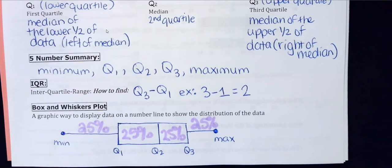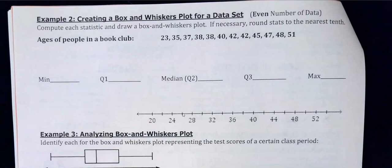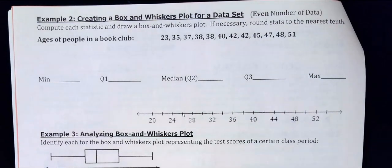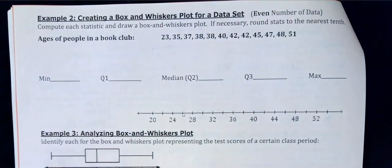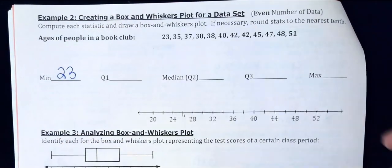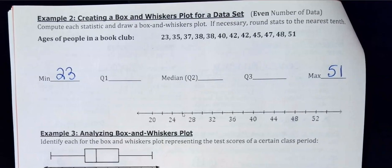On the back we have an even number of data values to show what changes. The data is already in order from least to greatest. The minimum is 23 and the maximum is 51. Calculate the median first, since you need it to identify the lower and upper halves.